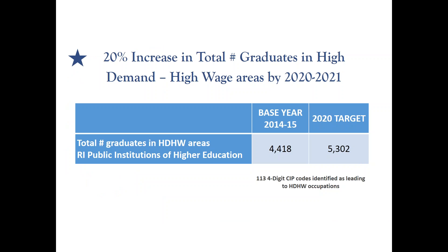The goal in the strategic plan was a 20% increase in total number of graduates in high demand, high wage areas by 2020-2021 at our three public institutions. The base is 2014-15 and the 2020 target. The definitions are not yet set in stone — that due date is October 1st — but this is how it currently looks. We used the SWEAP crosswalk to identify those graduates.